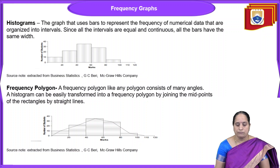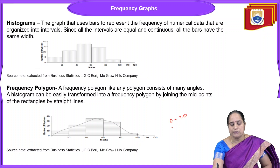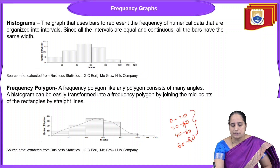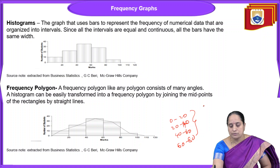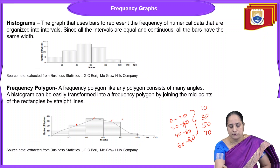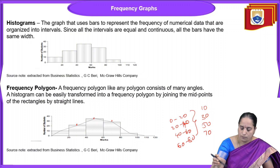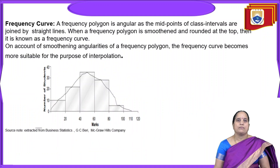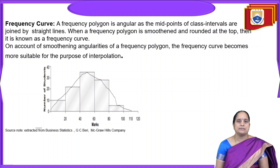For the frequency polygon, with class intervals 0–20, 20–40, 40–60, 60–80 and so on, we divide the intervals into mid values by taking (upper limit + lower limit) / 2, giving mid values of 10, 30, 50, 70. By joining all the midpoints, we get the frequency polygon. The next one is the frequency curve. A frequency polygon is angular as midpoints of class intervals are joined by straight lines. When a frequency polygon is smoothed and rounded at the top, it is known as a frequency curve.